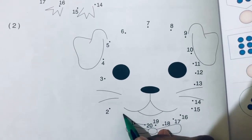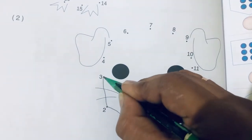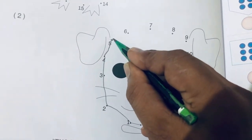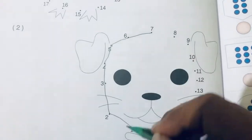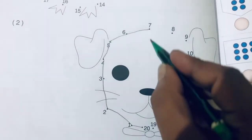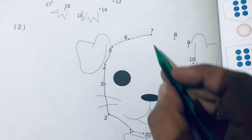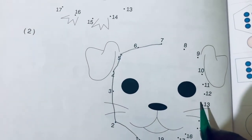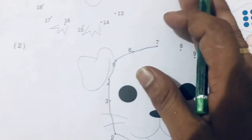Same way here also, start from 1, after 1 comes 2, then 3, then 4, then 5, 6, 7 — so from 1 to 20 you need to join the dots. You will get one picture, and after that you have to color it. Okay, then see question number 33.